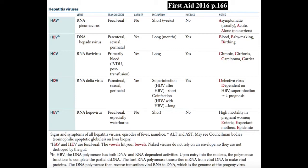Hepatitis B virus is a DNA hepadnavirus transmitted primarily by parenteral, sexual, and maternal-fetal routes. It has a longer incubation period of about three months, and you can have a hepatitis B carrier state. It uses cellular RNA polymerase to transcribe RNA from the DNA template within the virus, and uses reverse transcriptase to transcribe the DNA genome from the RNA intermediate made by the cell.